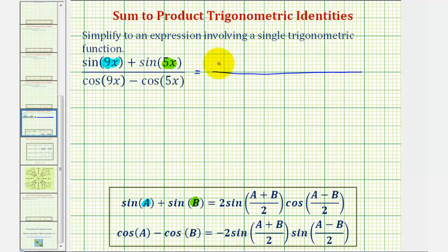So we'll have two times sine of (A plus B) divided by two, which would be 9x plus 5x, that'd be 14x divided by two.